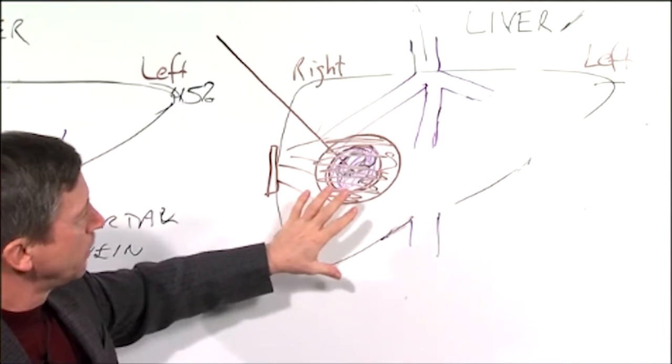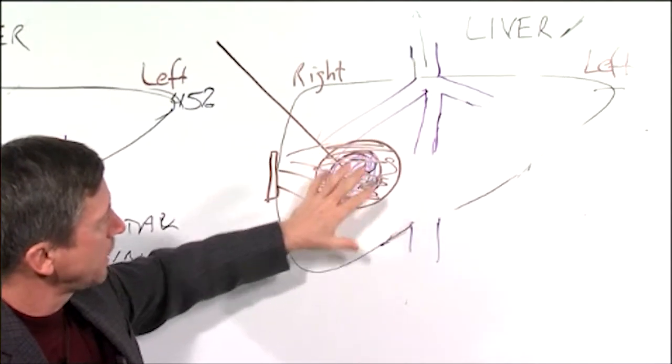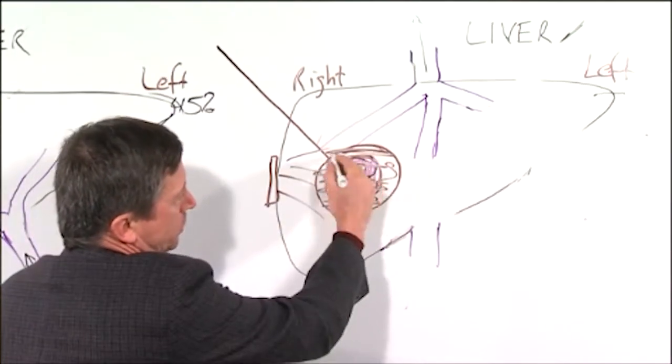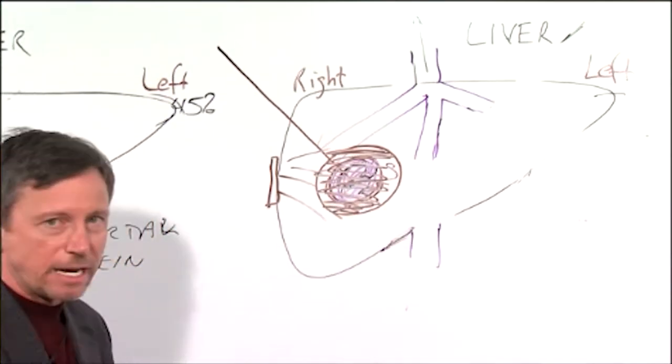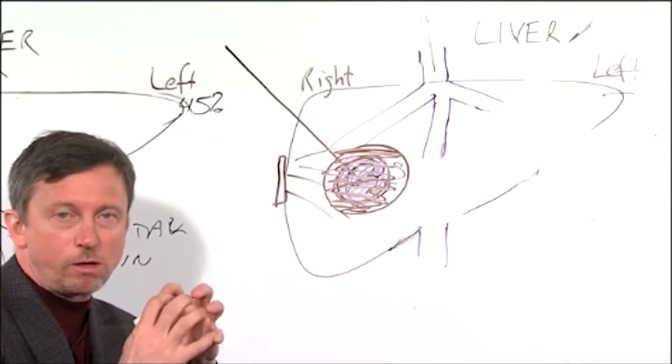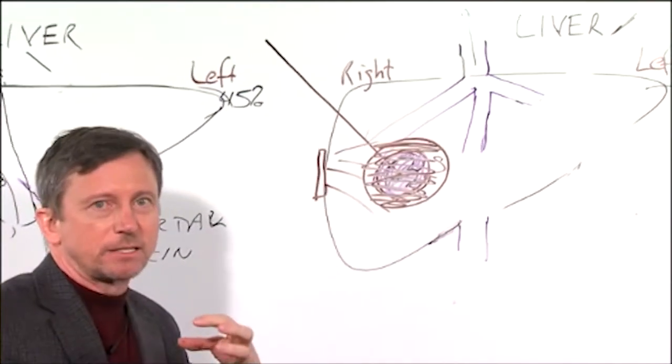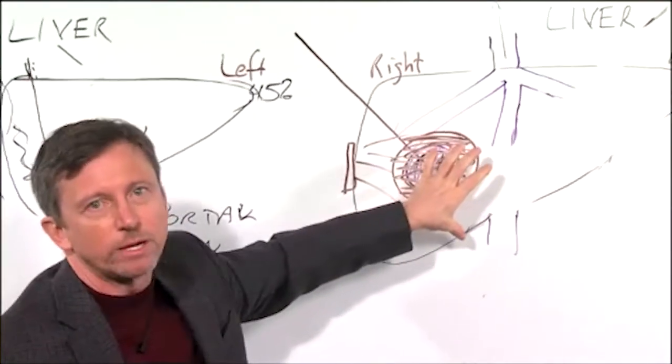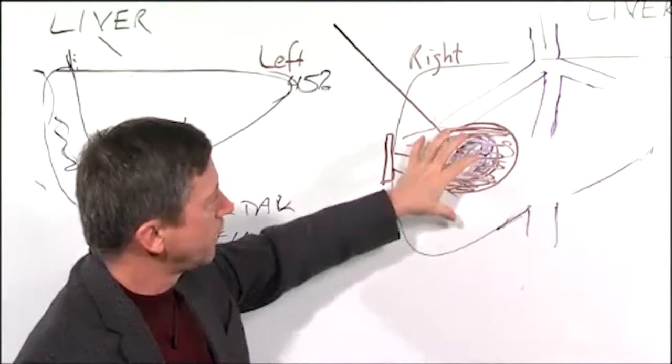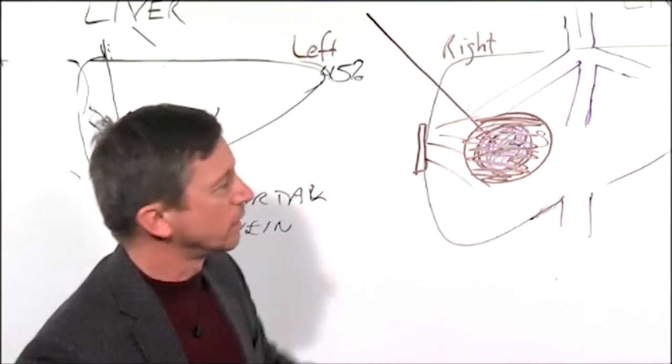The body will turn this to scar tissue and what you'll see on a CAT scan is basically just a dark hole where the tumor was. There won't be any vascularity to it, nothing will enhance on the CAT scan, so we'll just see a dark void or dark black hole there and that tells us that the tumor has been killed.